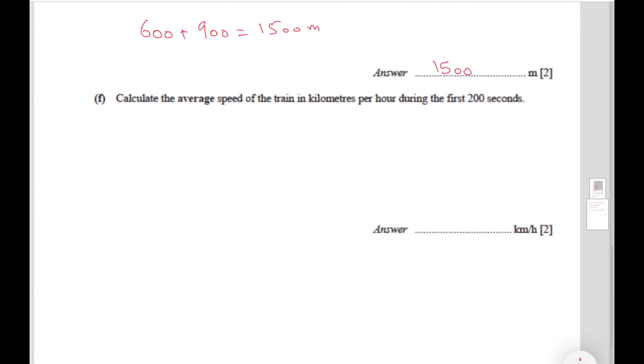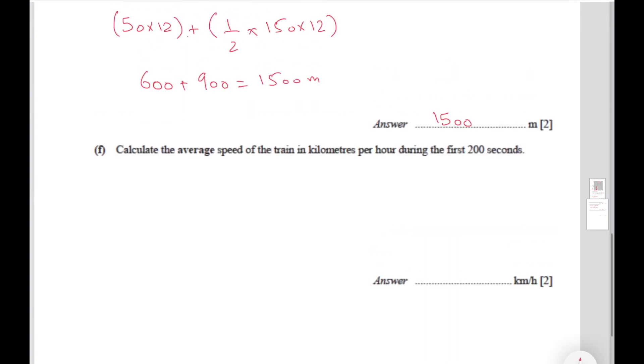The last part says calculate the average speed of the train in kilometers per hour during the first 200 seconds. So the distance the train traveled in the first 200 seconds was 1500 meters. To convert this into kilometers, we divide this by a thousand and we get 1.5 kilometers.